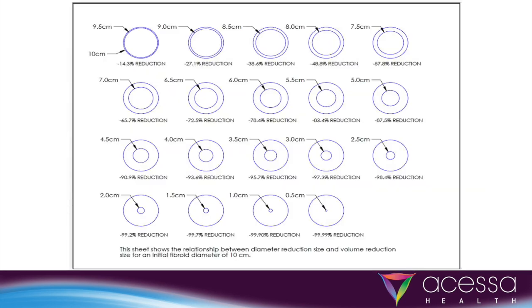To give an idea of what decreases in volume do to the size of a fibroid, this is a chart based off of a 10 cm fibroid. For example, going from 10 cm to 7.5 cm is a 57.8% reduction in volume. Going from a 10 cm fibroid to a 4.5 cm size is a 90.9% reduction in volume.